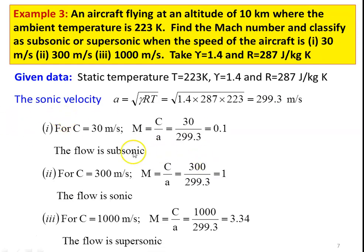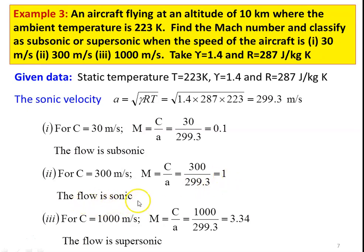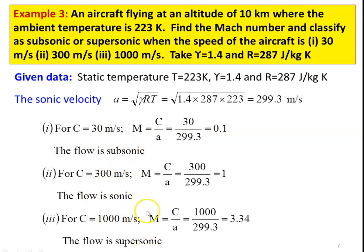For three different cases: Case 1, C = 30 m/s: M = C/A = 30/299.3 = 0.1 — flow is subsonic. Case 2, C = 300 m/s: M = 300/299.3 ≈ 1.0 — flow is sonic. Case 3, C = 1000 m/s: M = 1000/299.5 = 3.34 — flow is supersonic.